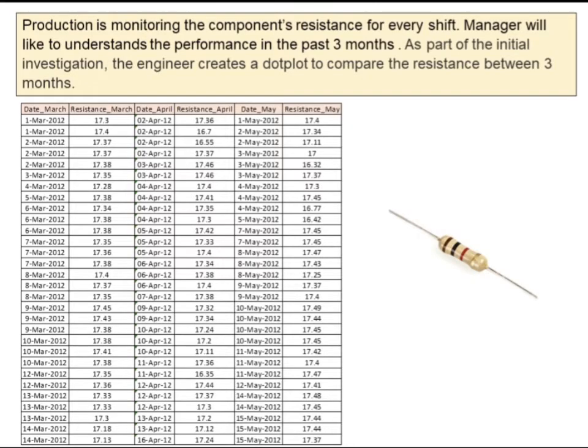Let us take an example. Production is monitoring the component's resistance for every shift. Manager would like to understand the performance in the past 3 months. As part of the initial investigation, the engineer creates a dotplot to compare the resistance between 3 months.